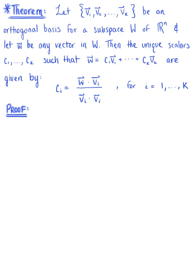So this theorem tells us the following. We want to let the set of vectors v sub 1 through v sub k be an orthogonal basis for a subspace W of R^n, and we want to let vector w be any vector in the subspace W.